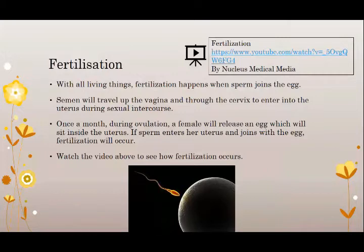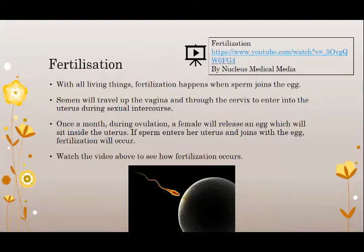Fertilization. With all living things, fertilization happens when sperm joins the egg. Semen will travel up the vagina after sexual intercourse and travel through the cervix to enter the uterus. Once a month during a stage called ovulation, a female will release an egg which will sit inside the uterus. If sperm enters her uterus and joins with the egg, fertilization will occur. Please do make sure to watch the video included on the slide to see how fertilization actually happens.